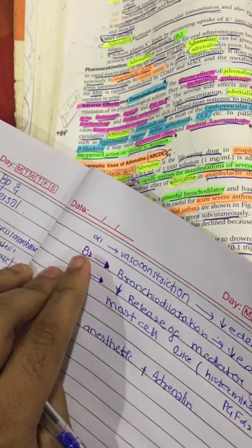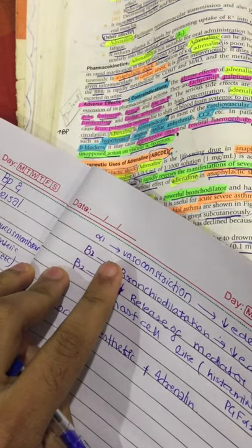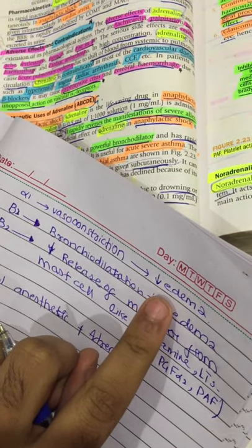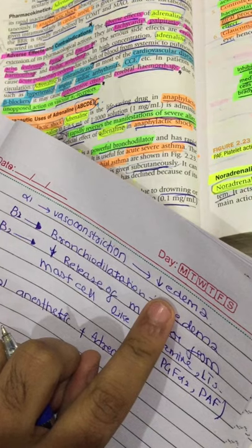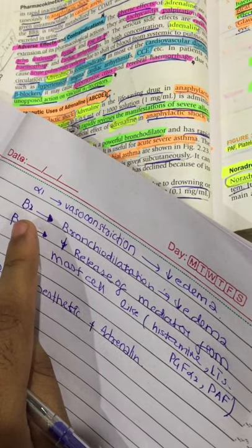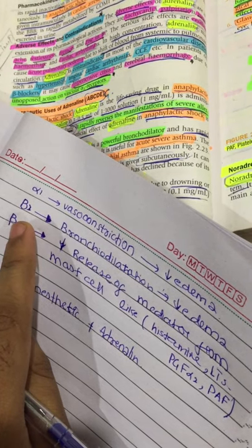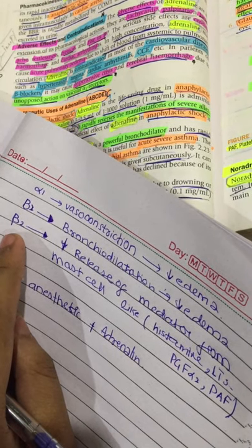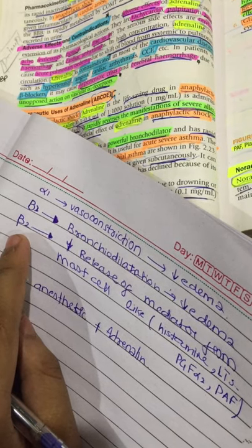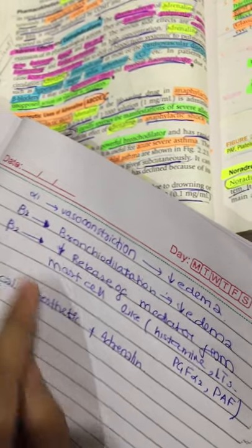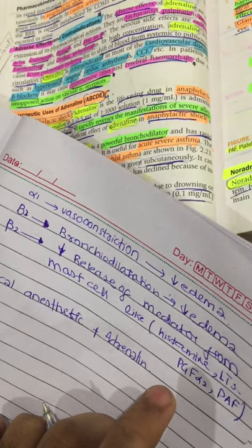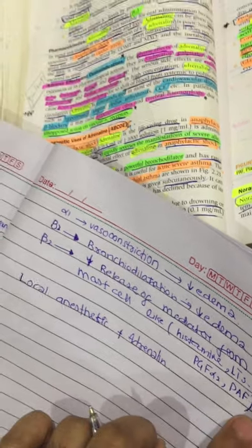The effects in bronchial asthma: it acts on the alpha-1 receptor causing vasoconstriction, which reduces mucosal secretion. Second, it acts on beta-2 receptors causing bronchodilation and reducing edema. Third, it acts on beta-2 receptors to reduce release of substances from mast cells — including histamine, leukotrienes, prostaglandins, and platelet-activating factor.